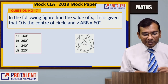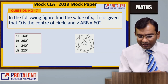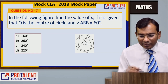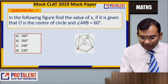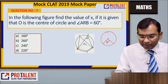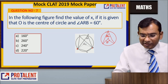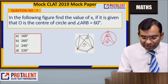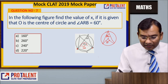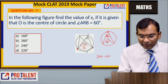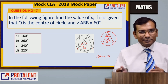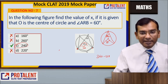Question number 7: In the figure, find the value of x. O is the center of a circle and angle ARB = 60°. A circle property states: the angle at the center is twice the angle at the circumference. So if angle ARB = 60°, then the central angle below is 120°. The angle on the other side would be 360° - 120° = 240°. So x = 240°.